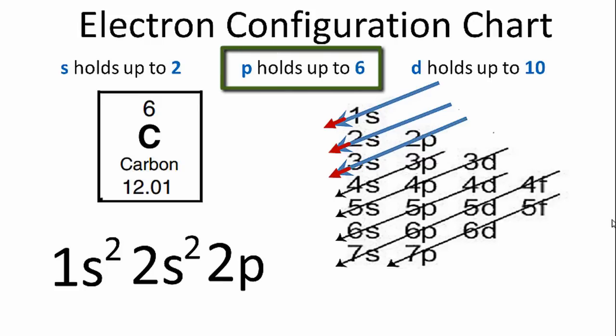And p's can hold up to 6, but we only need two more to use all the electrons for carbon. So we'll just put a 2 there.